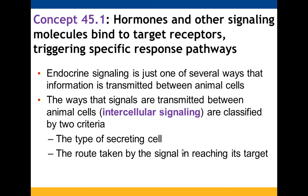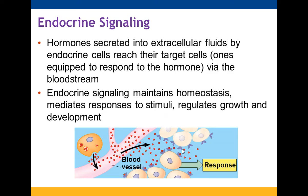Endocrine signaling is one form of intercellular signaling. It depends on the type of secreting cell and the route the signal takes to reach its target. With endocrine signaling, hormones are secreted into your extracellular fluids and move via the bloodstream. The goal is to maintain homeostasis, respond to stimuli, and regulate growth and development.